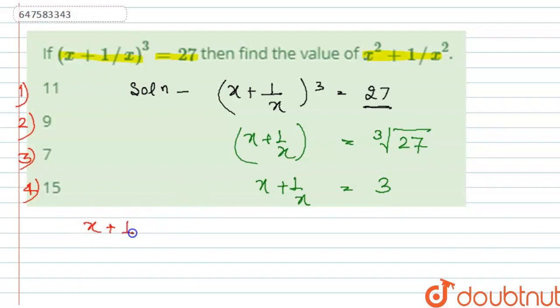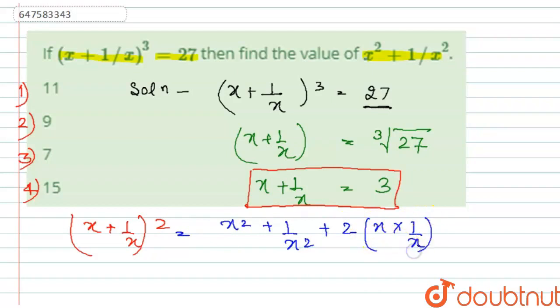We can say that x plus 1 by x whole square. If we square both sides, we can solve this equation. That will be equal to x square plus 1 by x square plus 2 into x into 1 by x.